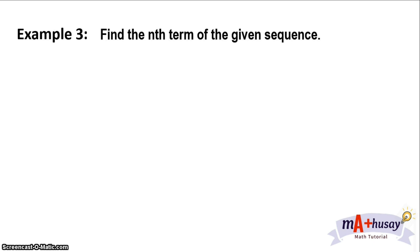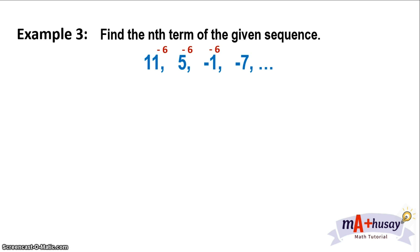Example number 3. We have the sequence 11, 5, negative 1, negative 7. As you can observe, the sequence is decreasing, and the terms after the first can be generated by adding negative 6 to the preceding terms. So 11 plus negative 6 gives positive 5; 5 plus negative 6 gives negative 1; negative 1 plus negative 6 gives negative 7, and so on. Since we're adding negative 6, negative 6 will be the numerical coefficient of n, so a sub n equals negative 6n.